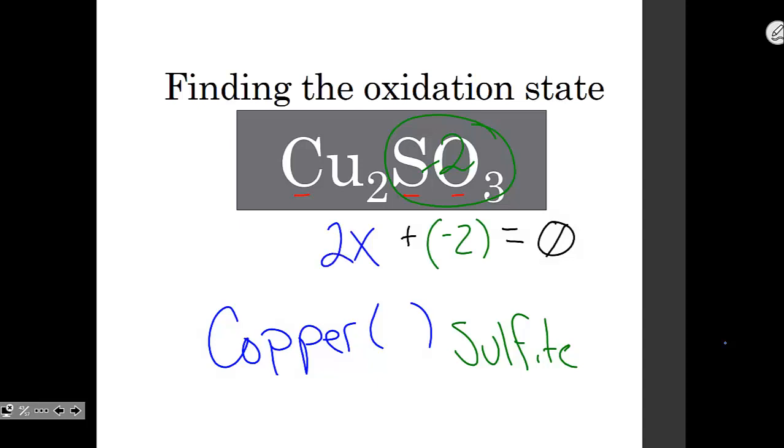So two somethings minus two must equal zero. Those two somethings must be a plus two, so each one must be a plus one. This is cuprous sulfite or copper sulfite.